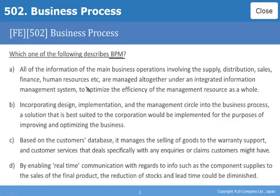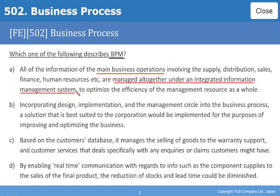Option a: All of the information of the main business operations involving the supply, distribution, sales, finance, human resources, etc., are managed altogether under an integrated information management system to optimise the efficiency of the management resource as a whole.